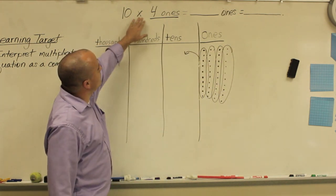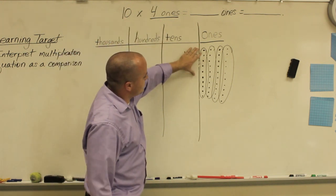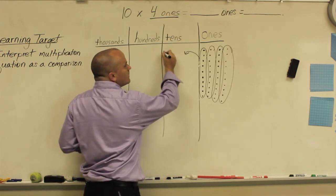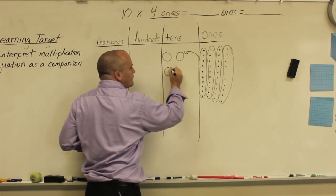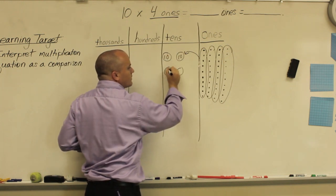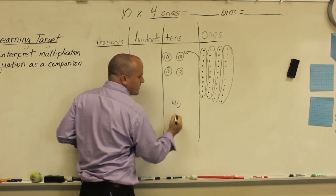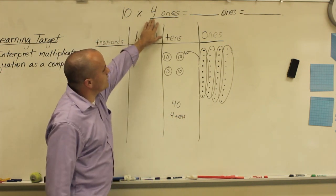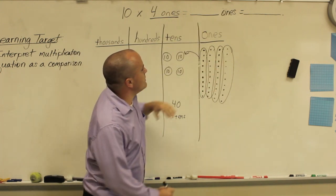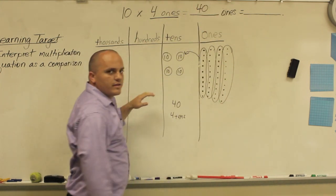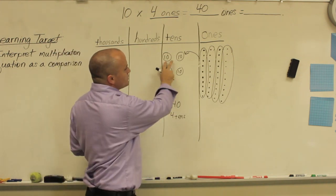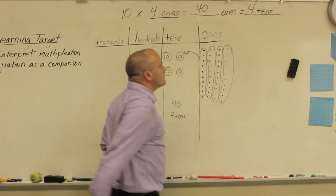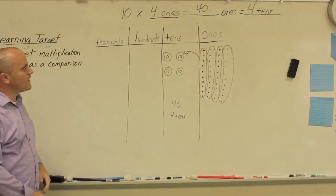We have ten ones, four ones, and we have ten times. So here's my first group, my second group, my third group, and my fourth group. All together that's going to give me four tens — one, two, three, and four — or you can think of that as forty, or four tens. So ten times four, all together we have forty ones. And then forty ones is the same thing as one, two, three, four tens. And there's the solution for our first homework problem.